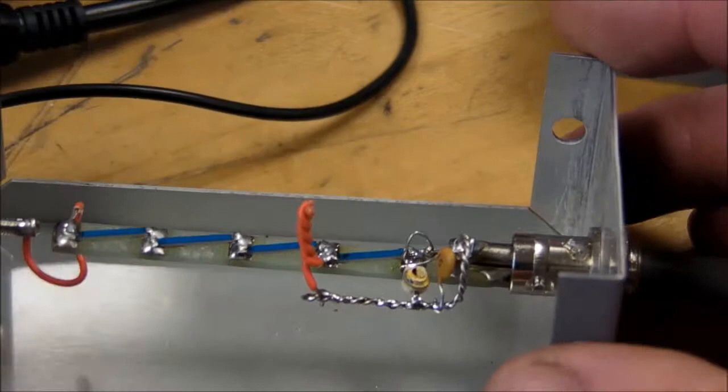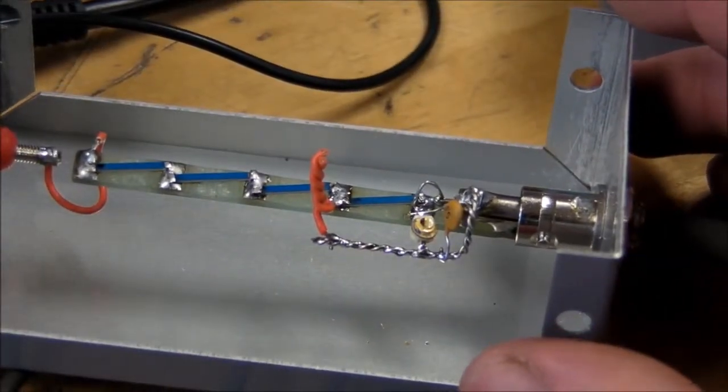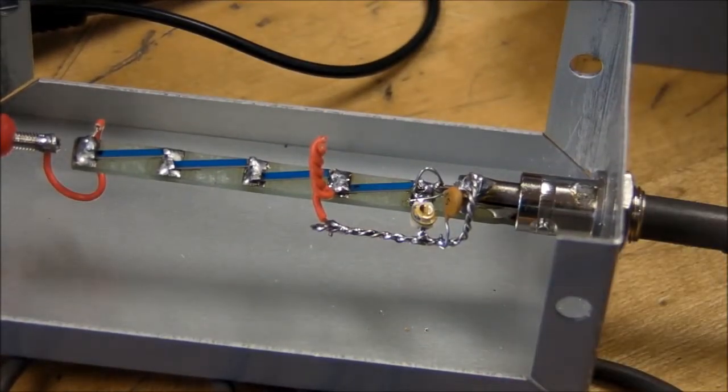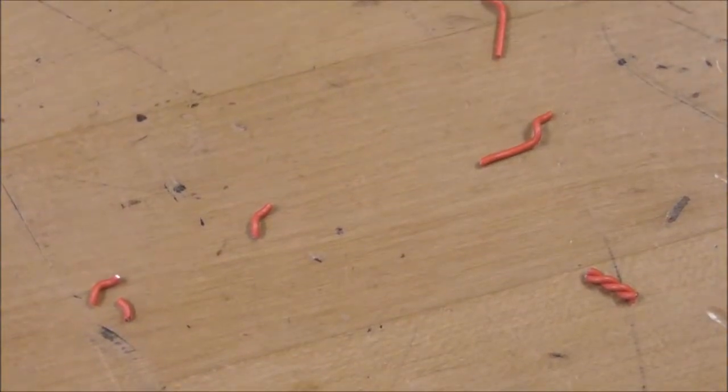If you only need one, two, three, or four picofarads in that range, you can just twist a pair of wires together. You want to twist them a little longer than what you expect, and then you just cut off little tiny bits and pieces until you finally get the exact capacitance that you need.